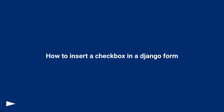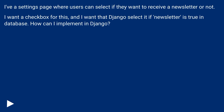How to insert a checkbox in a Django form. I have a settings page where users can select if they want to receive a newsletter or not. I want a checkbox for this, and I want Django to check it if newsletter is true in the database. How can I implement this in Django?